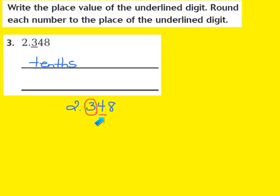Now I have to ask myself, is that 4 less than 5? If that 4 is less than 5, that means my circle digit stays the same. Or, is that 4 greater than 5? If it is, then I have to increase my circle digit by 1. I know that 4 is less than 5, so my circle digit is going to stay the same. I still have my whole number 2, then my decimal. My 3 will stay the same, but I drop the digits to the right of the circle digit. So my 4 and my 8 disappear, and my answer is 2 and 3 tenths.